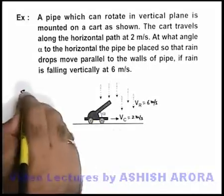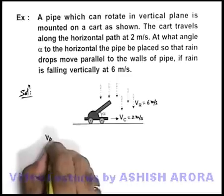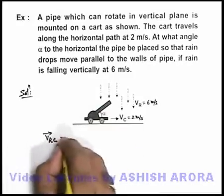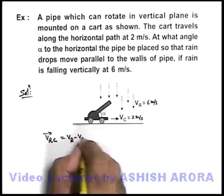Now in this situation, we calculate velocity of rain with respect to the cart on which the pipe is mounted, so it will be v_r minus v_c.